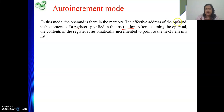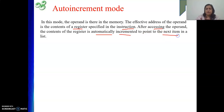But here one more thing is there. After you have accessed the operand, the contents of the register is automatically incremented to point to the next item in a list. Whatever type of element the address was pointing to previously, depending on that type and its length, the content of the register will be incremented by that amount.